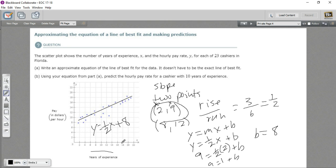Now, once we have this equation, we can use it to predict any outcome along this line. And in part b, they're asking us to predict the hourly pay rate for a cashier with 10 years of experience. The pay is in the y. So we're going to find y. The experience is in x. So we're actually going to plug in 10 for x. So this is going to be y = (1/2)(10) + 8.